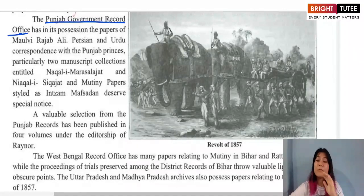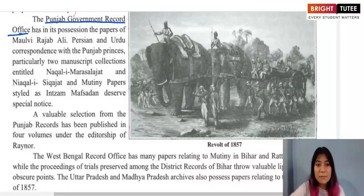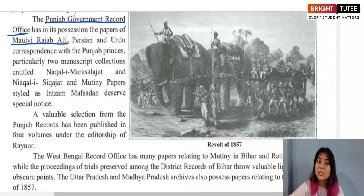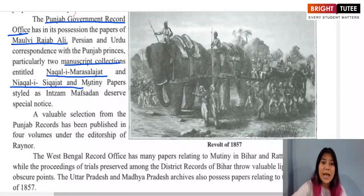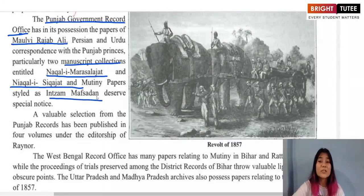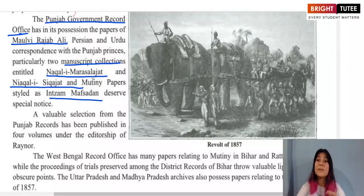The Punjab Government also has its own record office with papers related to the mutiny, including papers of Malvi Rajab Ali, manuscript collections entitled 'Nakal-e-Mara Salajat' and 'Nakal-e-Kajat', and mutiny papers styled as 'Intizam Mafsadhan'.